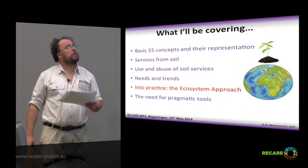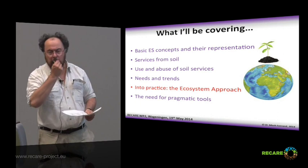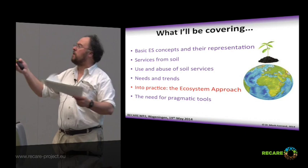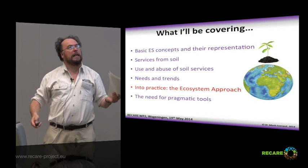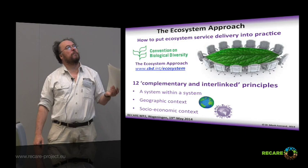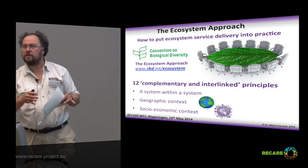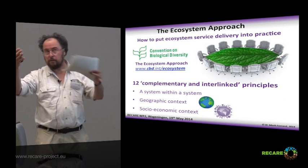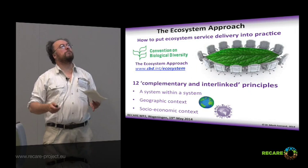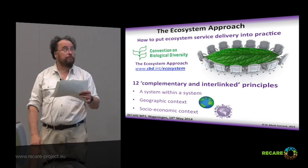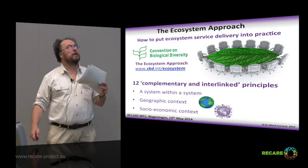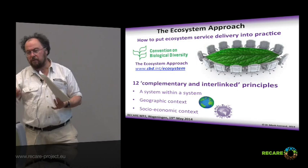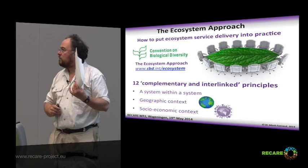I'm going to talk about the ecosystem approach. You will see the term used synonymously with ecosystem services, but it means something different. The term ecosystem approach came out of the Convention on Biological Diversity — mentioned in 1992, signed up to as a concept in 1995 by most CBD signatories, and the definition was revised in 2000. It's all about putting ecosystem service delivery into practice, comprising 12 complementary and interlinked principles. It puts ecosystem service delivery in geographical and socioeconomic contexts. So it's not the same as ecosystem services.